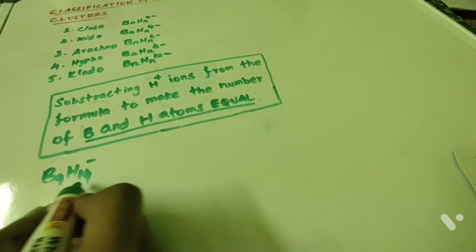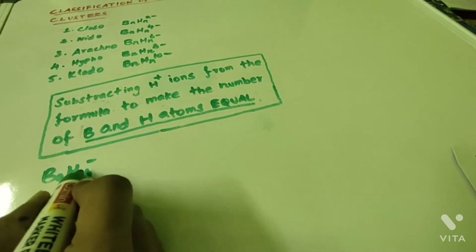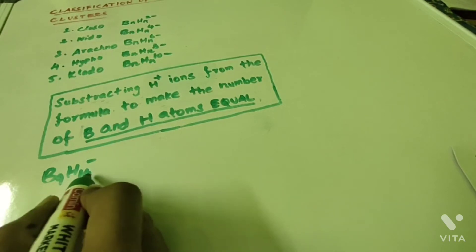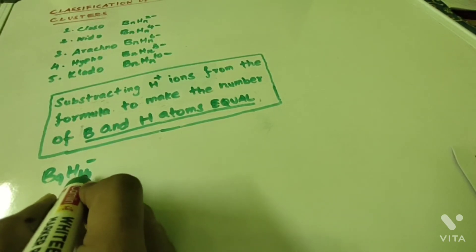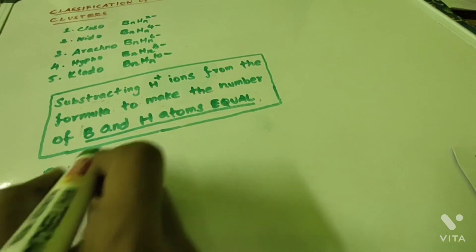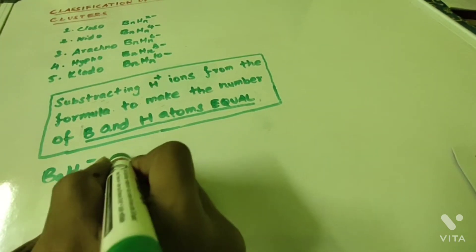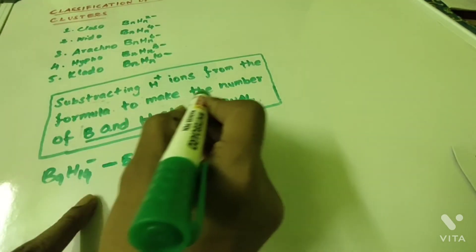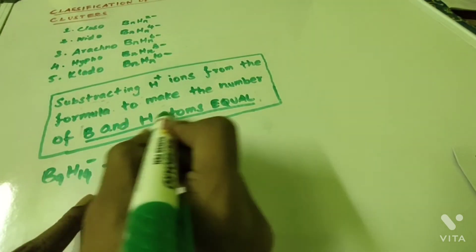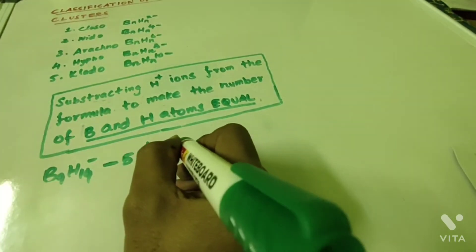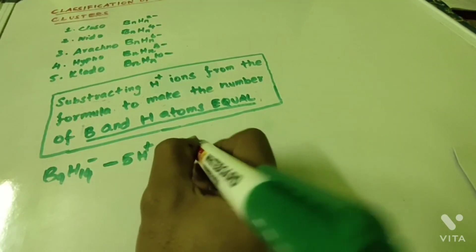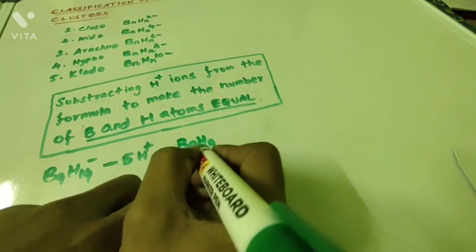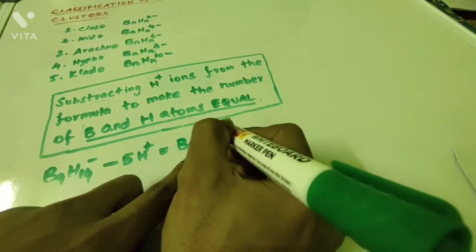In this case, 5 additional H⁺ ions are present — the formula is B₉H₁₄. So 5 excess hydrogen atoms exist. I am going to subtract 5 H⁺ ions to make the number of boron and hydrogen atoms equal. Therefore, the formula will be B₉H₉. The formal charge on this cluster is 6 minus.